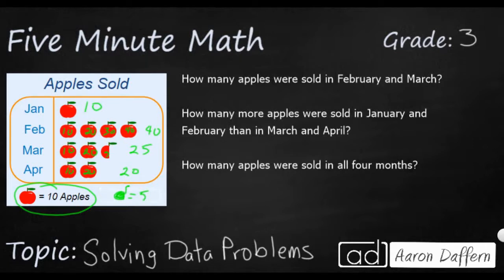How many apples were sold in February and March? We're going to combine February and March. So that's going to be 40 plus 25. And that's going to get me 65. So once you label it, the addition is very simple.